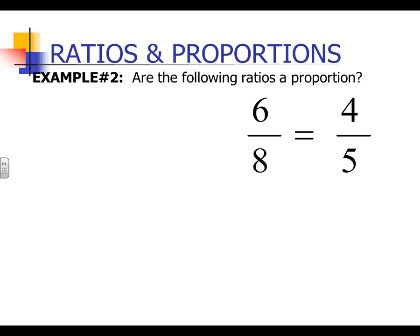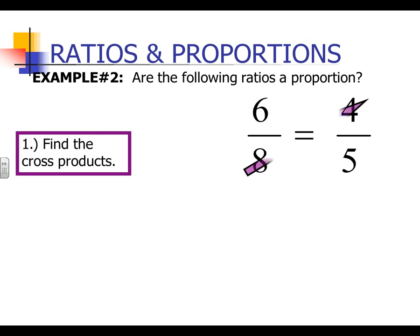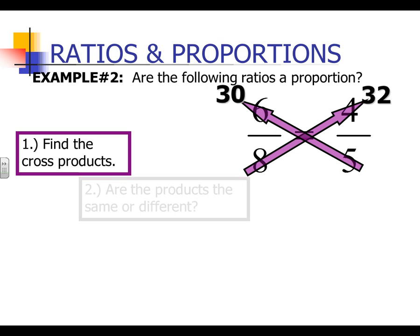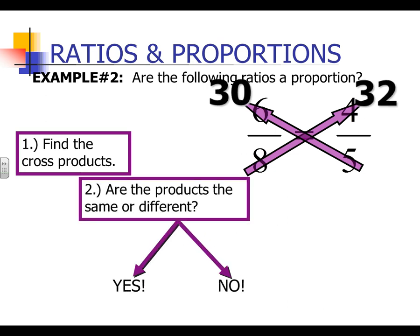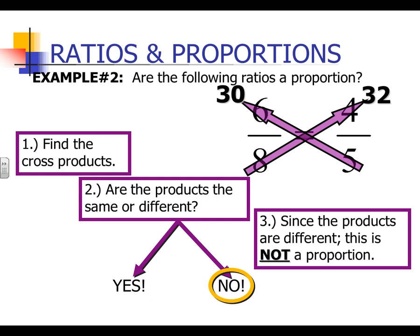Here's our next example, example number 2. We're going to use the same method: find cross products. 8 times 4 is 32, 5 times 6 is 30. Are the products the same or are they different? According to my calculations, they are not the same. Therefore, we're not dealing with a proportion. That's a very simple way of comparing ratios and telling whether or not it's a proportion.